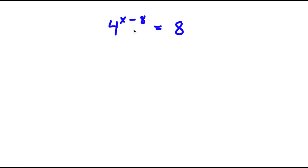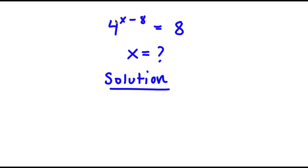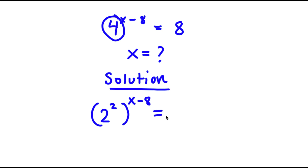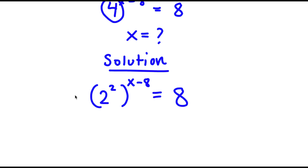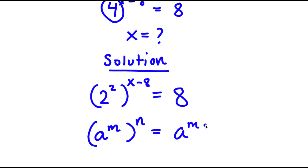In this problem, I have 4 to the power of x minus 8 is equal to 8. To solve this, I obviously want to find x. For my solution, I'm going to first start by rewriting 4 as 2 squared. So now I have 2 squared to the power of x minus 8 is equal to 8.